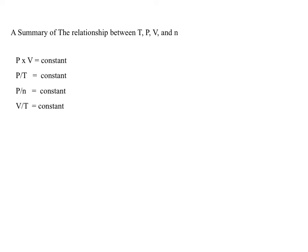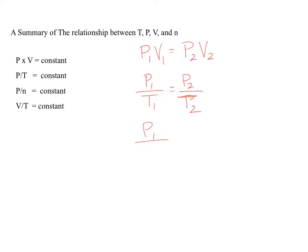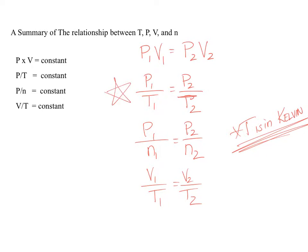Here's our summary of relationships: Pressure and volume — P1V1 = P2V2 (inversely related). Pressure and temperature — P1/T1 = P2/T2 (directly related); cross-multiply first to get rid of the fraction. Pressure and number of moles — P1/N1 = P2/N2 (directly related). Volume and temperature — V1/T1 = V2/T2 (directly related). Always remember: T must be in Kelvin — anytime we deal with temperature in gas laws, it has to be in Kelvin.